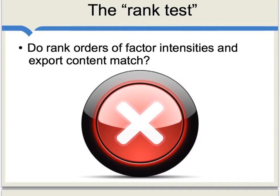The authors also develop what is called the rank test. If a country ranks, say, number three in labor intensity of its factors, we would expect that same country to rank very high in labor intensity of its exports. Yet in general, that is not the case. The rank order of factor intensity in a country does not very well predict the rank order of factor content in that country's exports. Instead, a country which ranks really high in terms of having a lot of labor will be exporting more capital in its goods than you might otherwise expect.